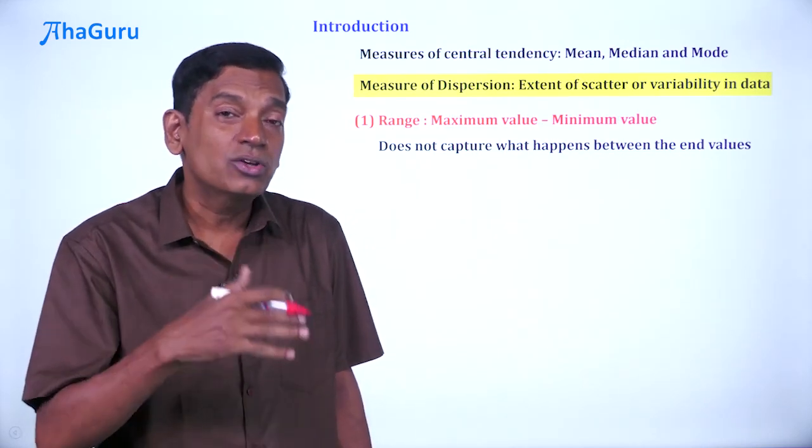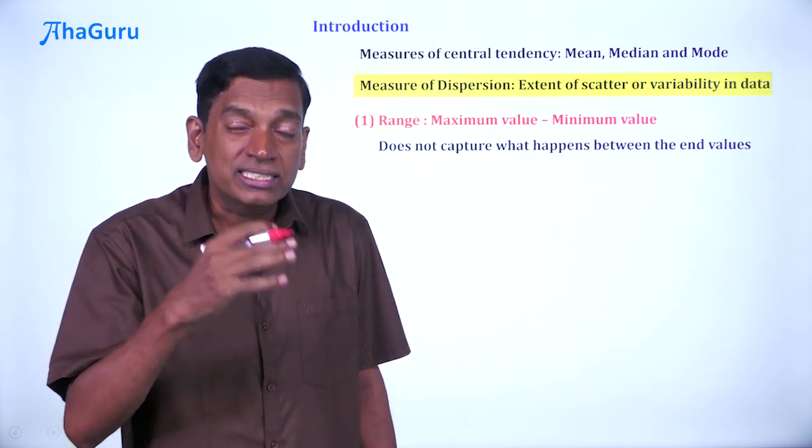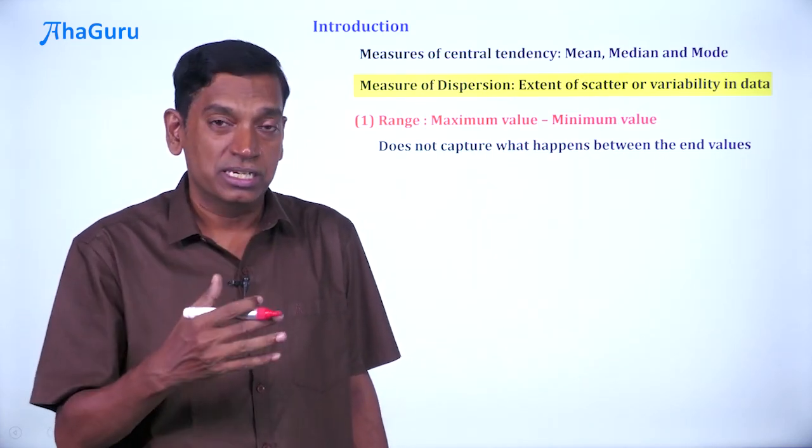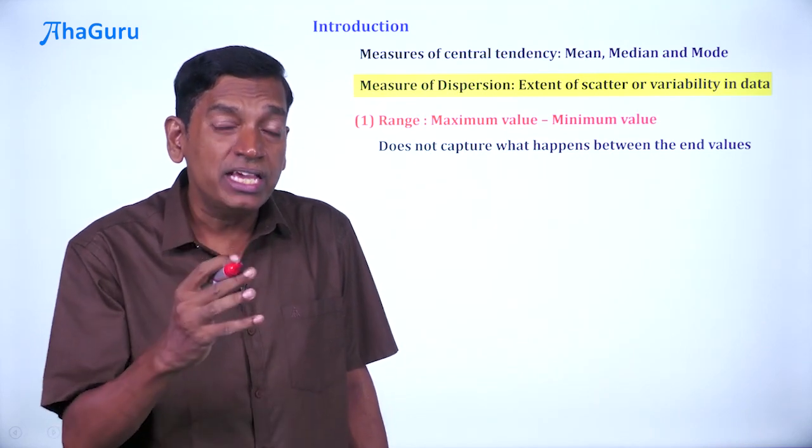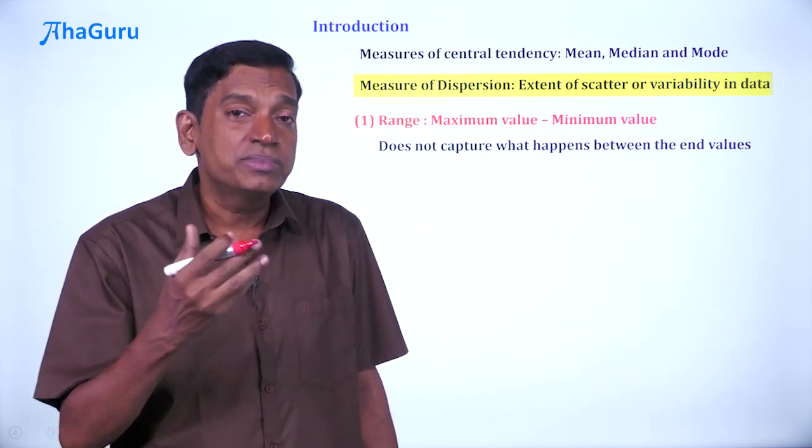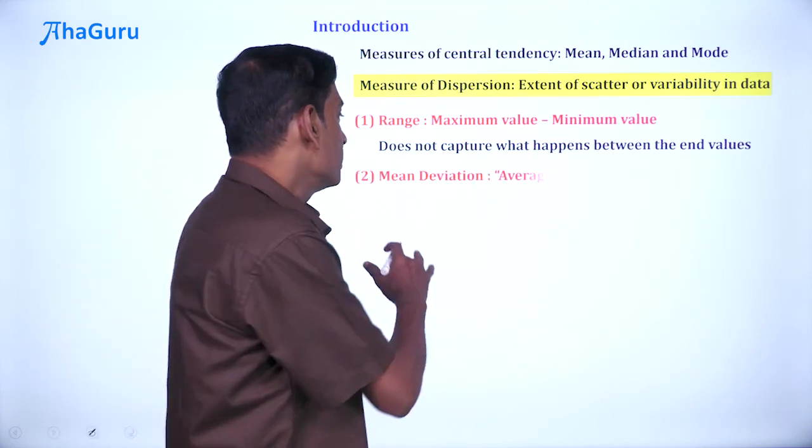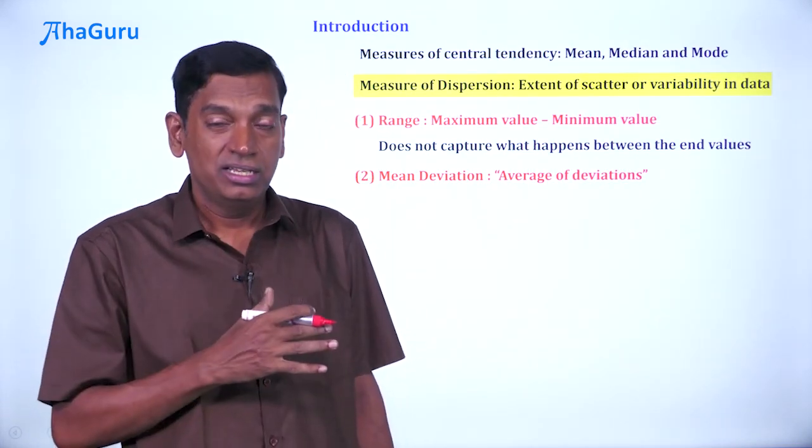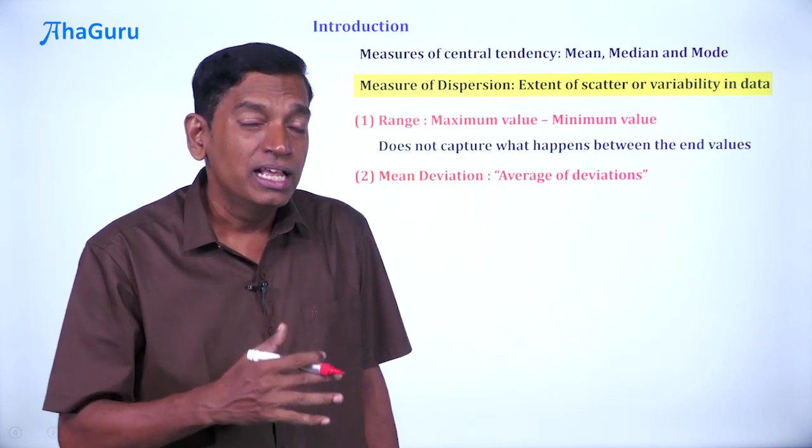What is the next alternative? Well, we can somehow incorporate all the data values in capturing this dispersion. So we can calculate deviation of each of these from some number, and that is what is known as mean deviation or average of deviations. So what do we do here?